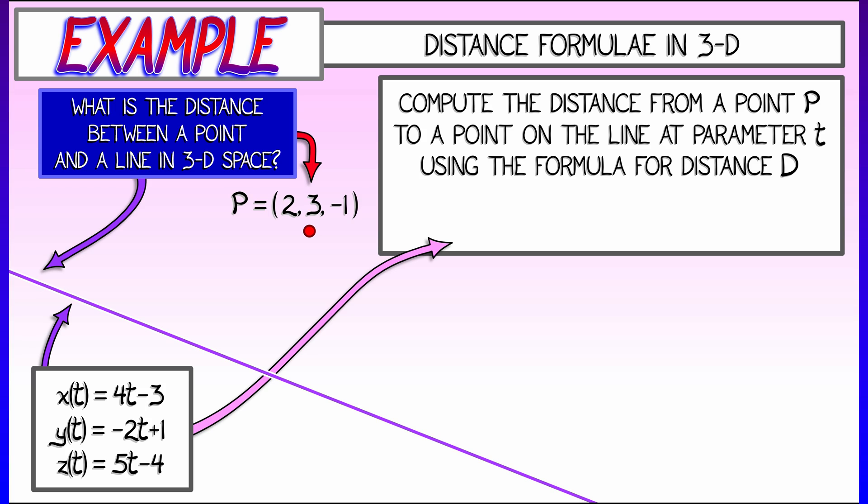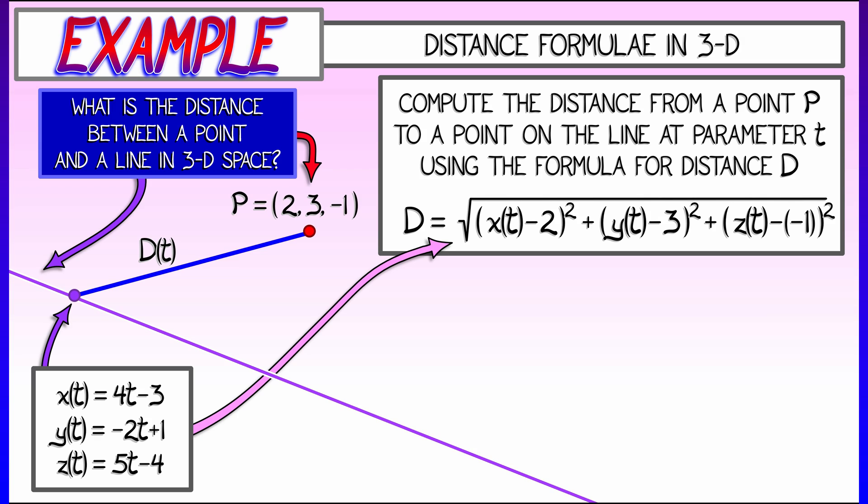Then at any given value of t, you can compute the distance d from the point P to the corresponding point on the line by using the distance formula in 3D. So I have x of t and y of t and z of t, and I look at the differences between those and the x, y, and z coordinates of that point P. Take the squares, sum them up, take the square root. That is the distance.